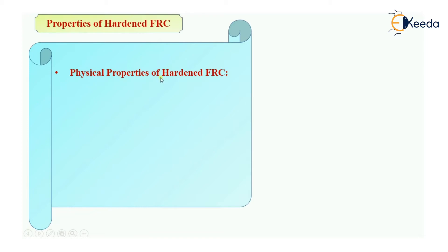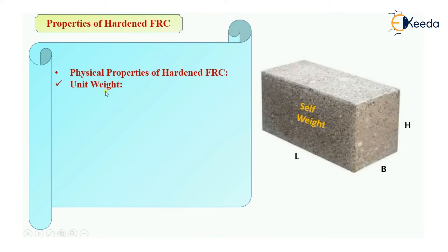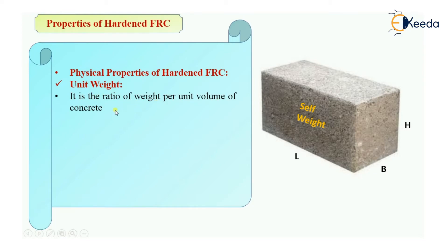Now let's see the physical properties of hardened fiber-reinforced concrete. The first property is unit weight. Unit weight is defined as the ratio of weight per unit volume of concrete. We weigh the concrete member — say a cube — and divide it by its volume, where volume equals length × width × height. That gives us the unit weight of the FRC member.